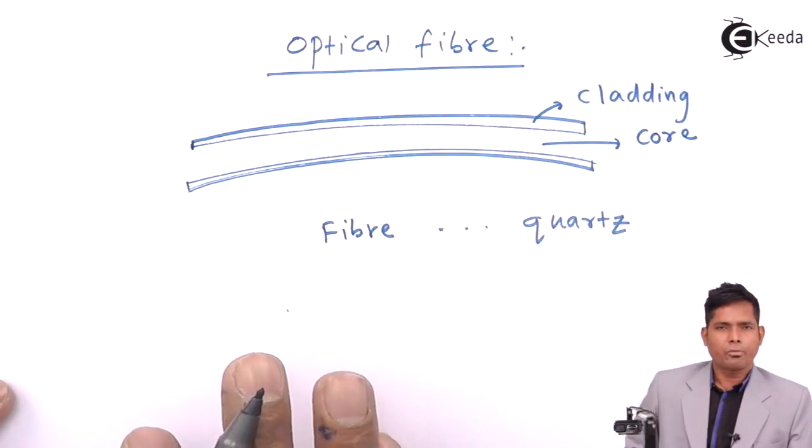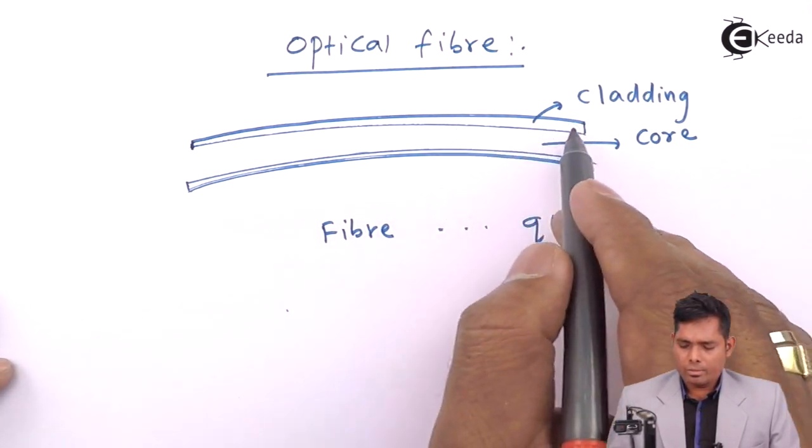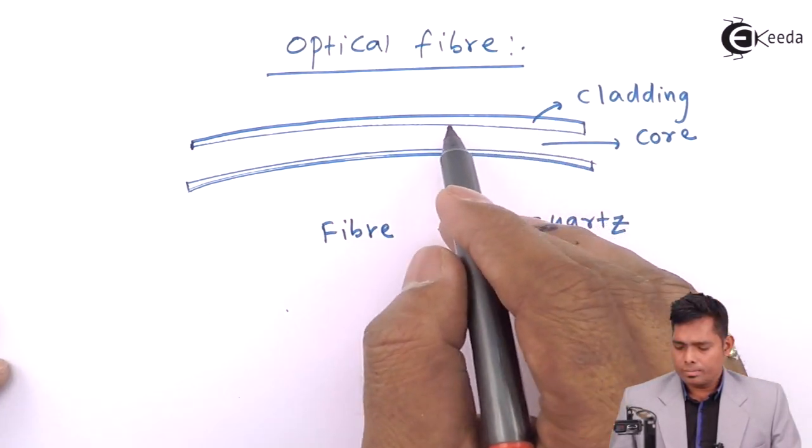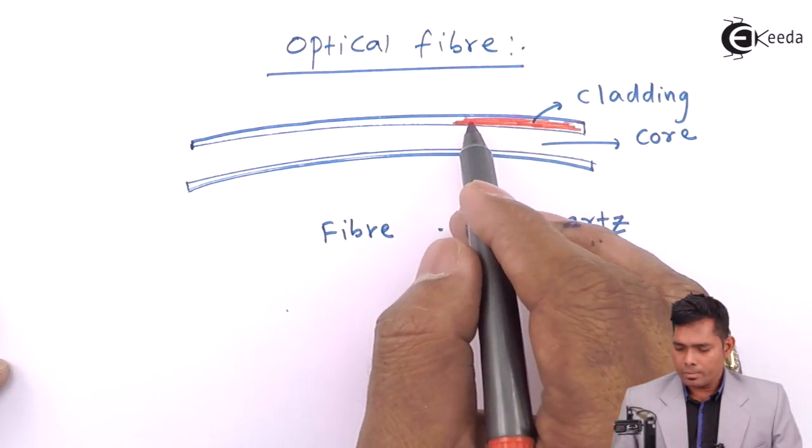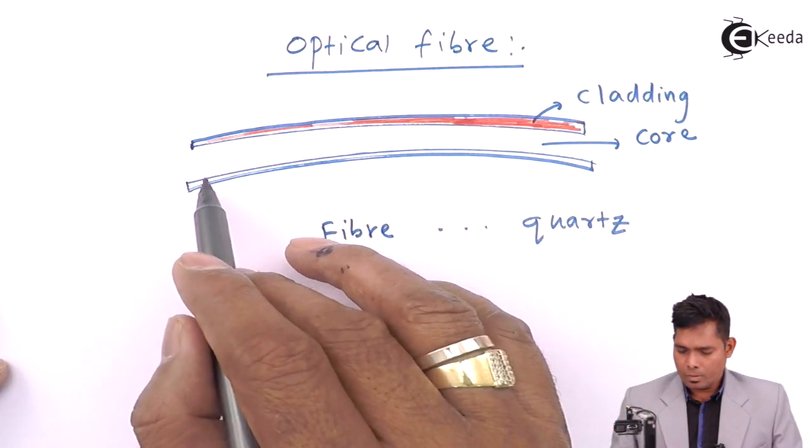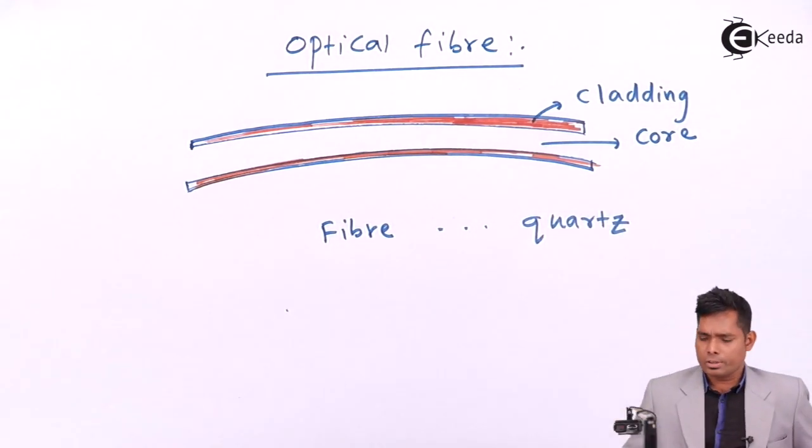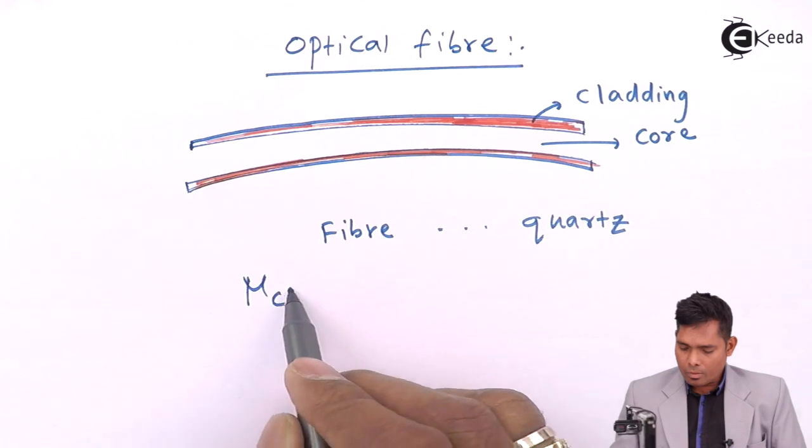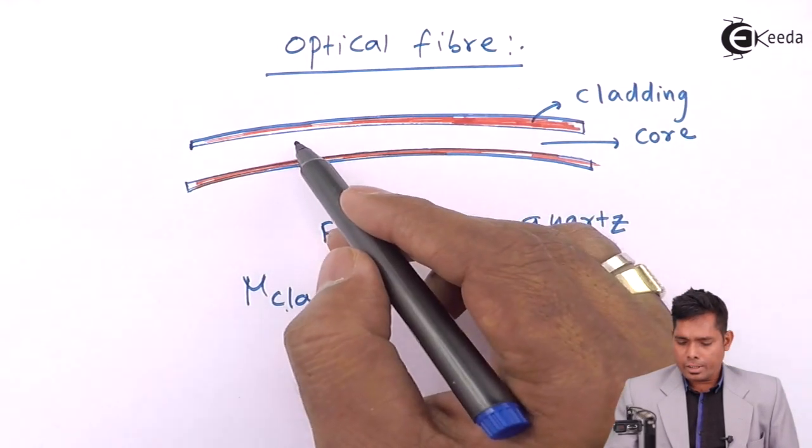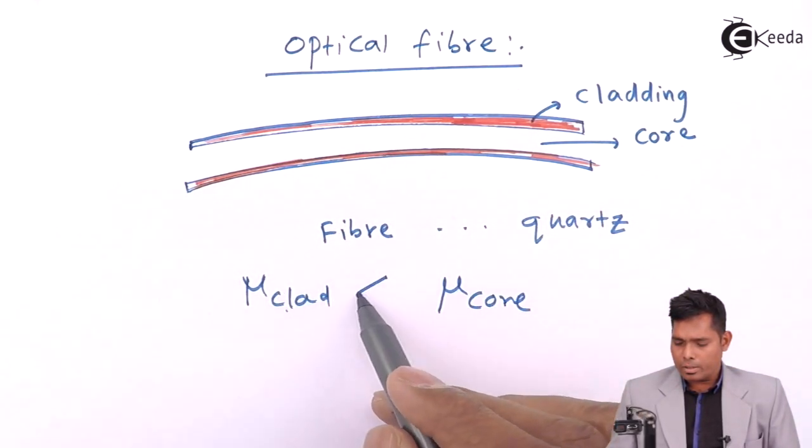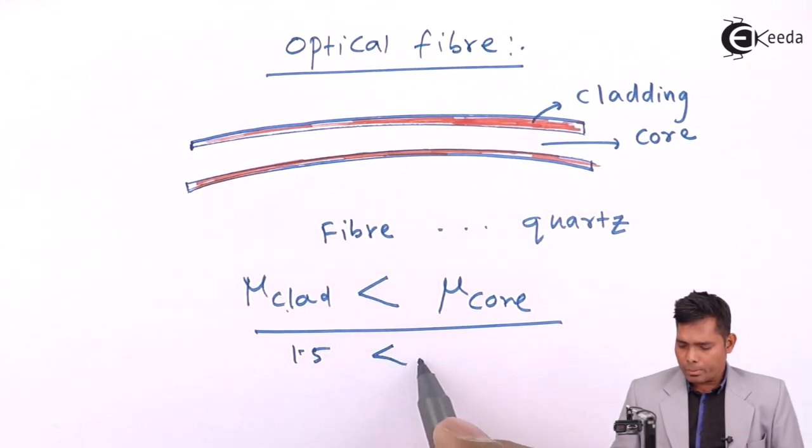This material and that material are different. The cladding is made up of different material. The refractive index for this cladding and the refractive index of core, both are different. Here it is denser, so this is less than that. Generally it is 1.7 and 1.5. So this is 1.5 and this is 1.7.